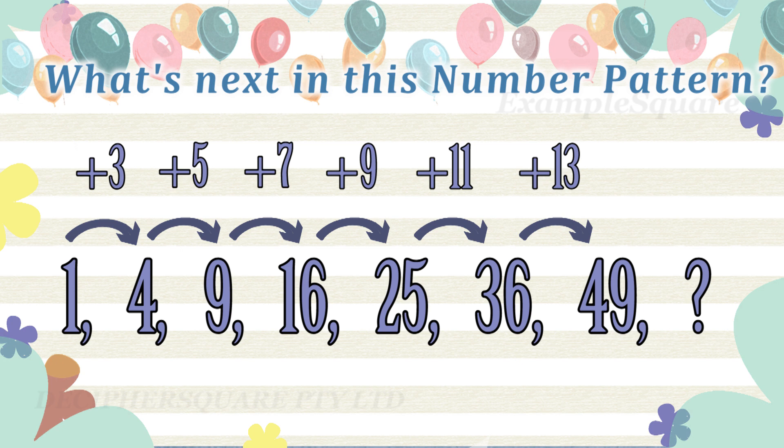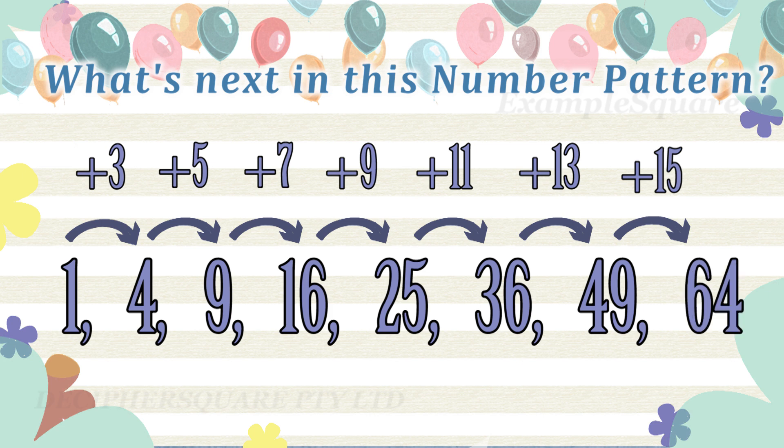The next odd number in this sequence is 15. That is, the difference between the next set of consecutive numbers in the pattern should be 15. And so 49 plus 15 equals 64 — the next number in the pattern should be 64.